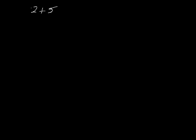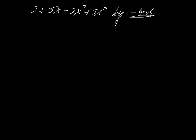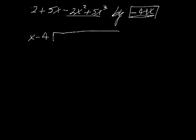Problem 16.3 says divide. We're going to divide 2 plus 5x minus 2x squared plus 5x cubed by negative 4 plus x. When it says 'by,' that term goes outside of the division sign, and the other polynomial goes inside. But first we have to reorder these — we always want it written variable first, constant last.